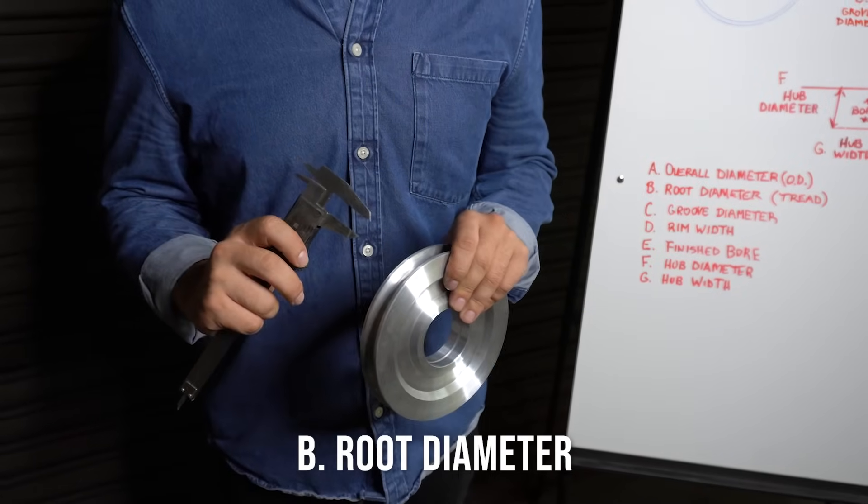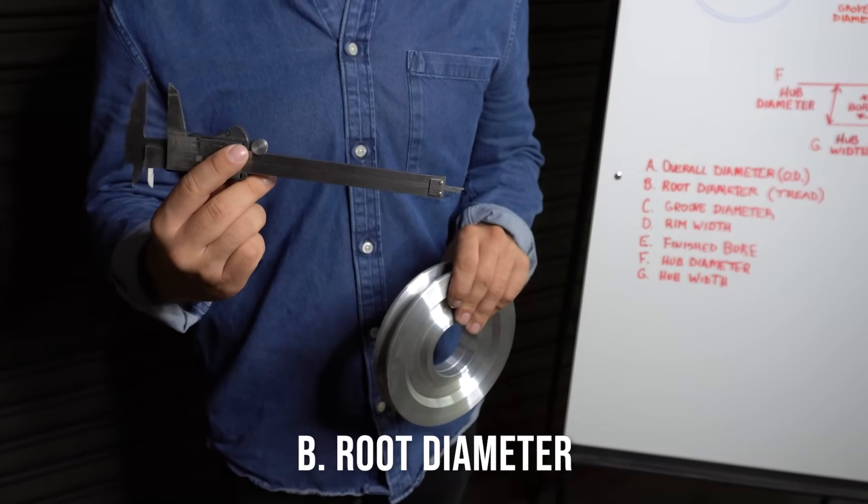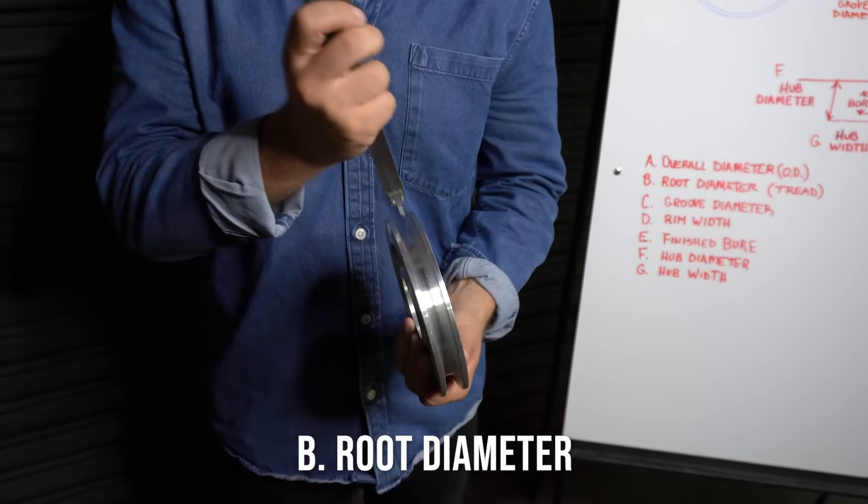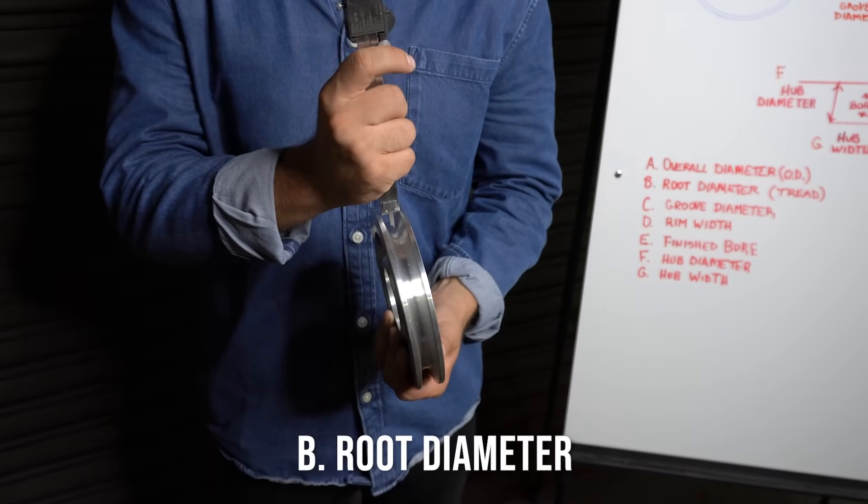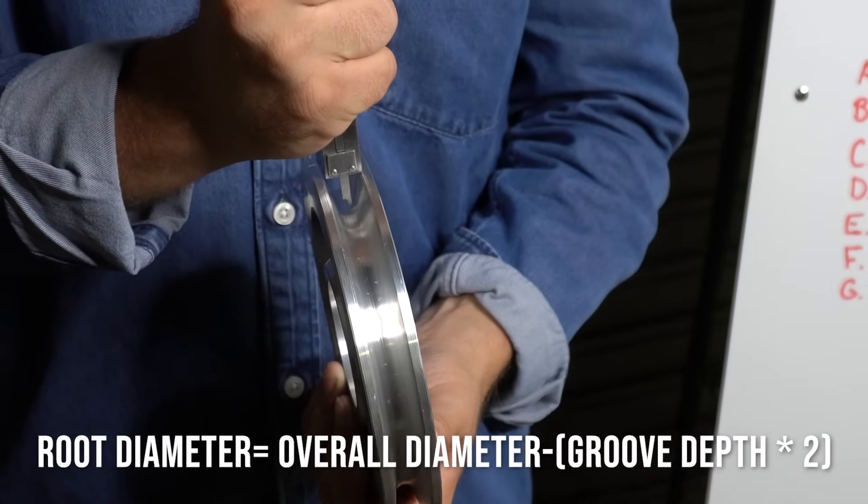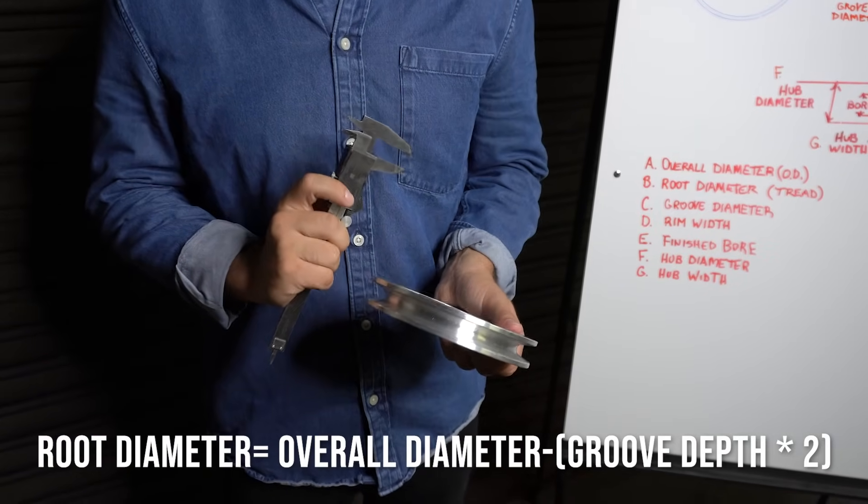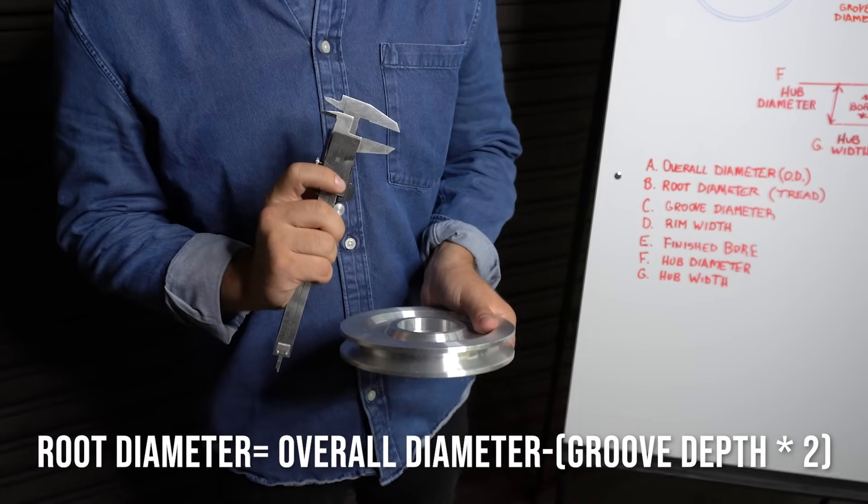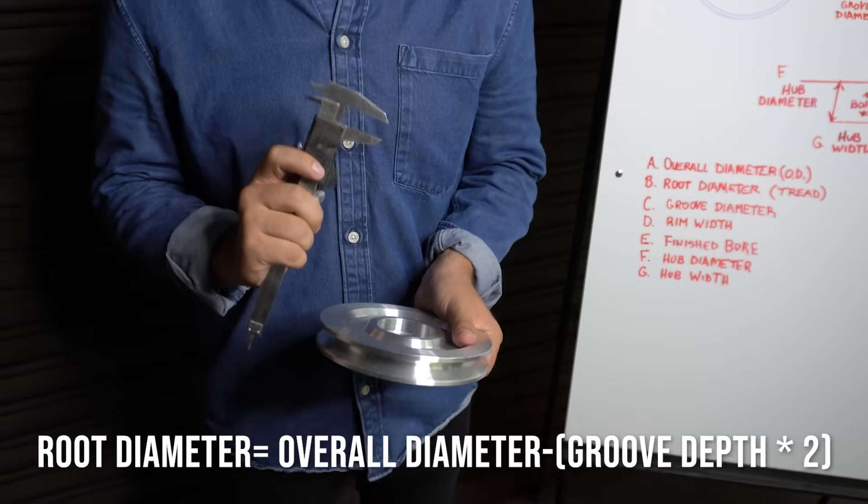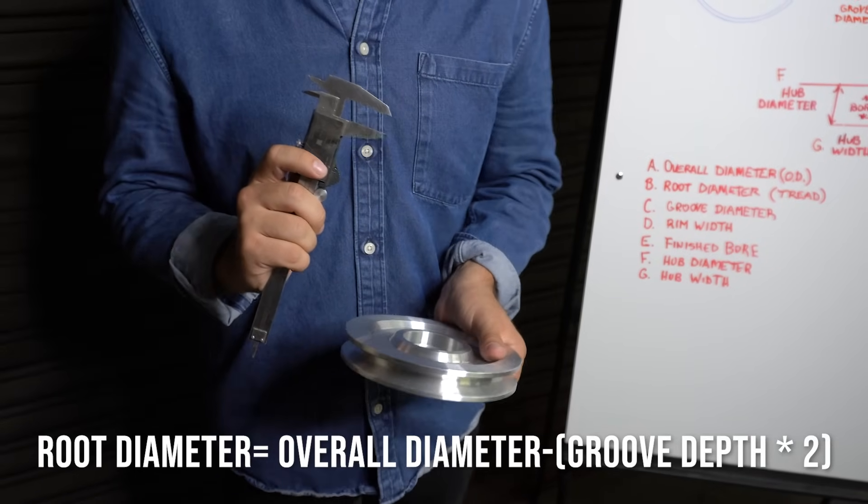There are several ways to get your root diameter. This one uses a caliper. You take the caliper and place it to the bottom of the groove and the top of the shiv until they line up. This is 0.5. Then you take that measurement and double it. It gives us one and then we subtract that from the overall diameter. That will give you the root diameter.